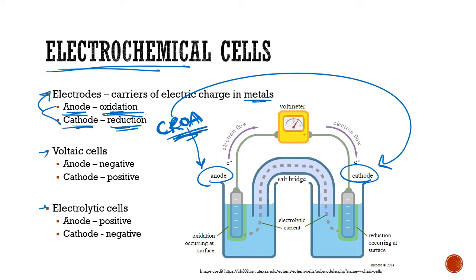Interestingly, in voltaic cells the anode will be negatively charged and the cathode will be positively charged. This is easy to remember because anions are negatively charged ions and cations are positively charged ions — so they kind of match: negative and positive.